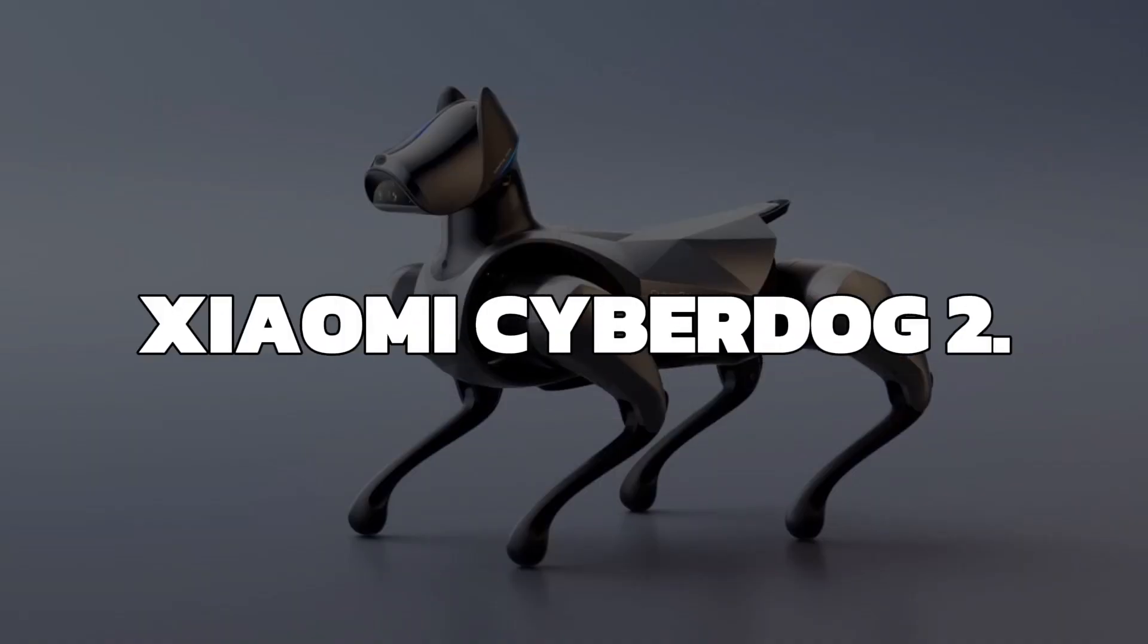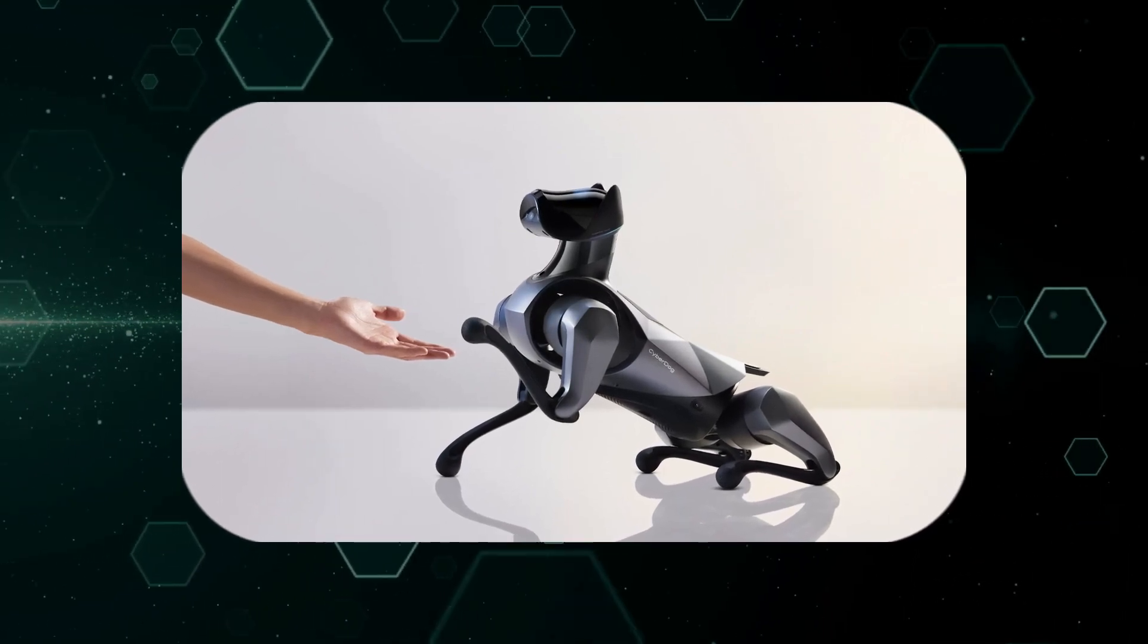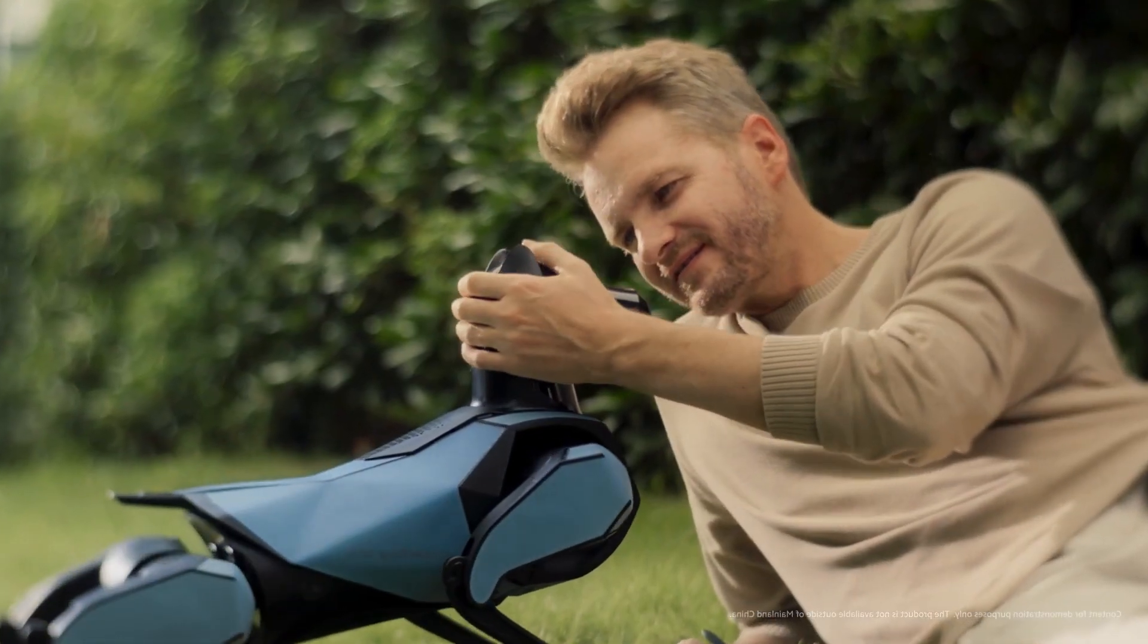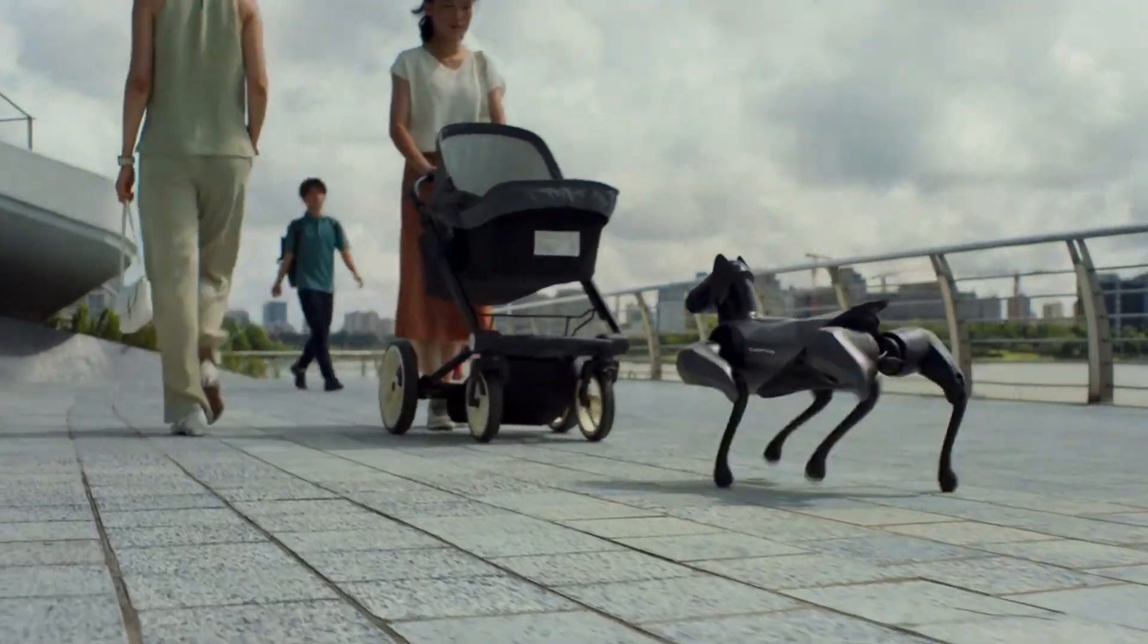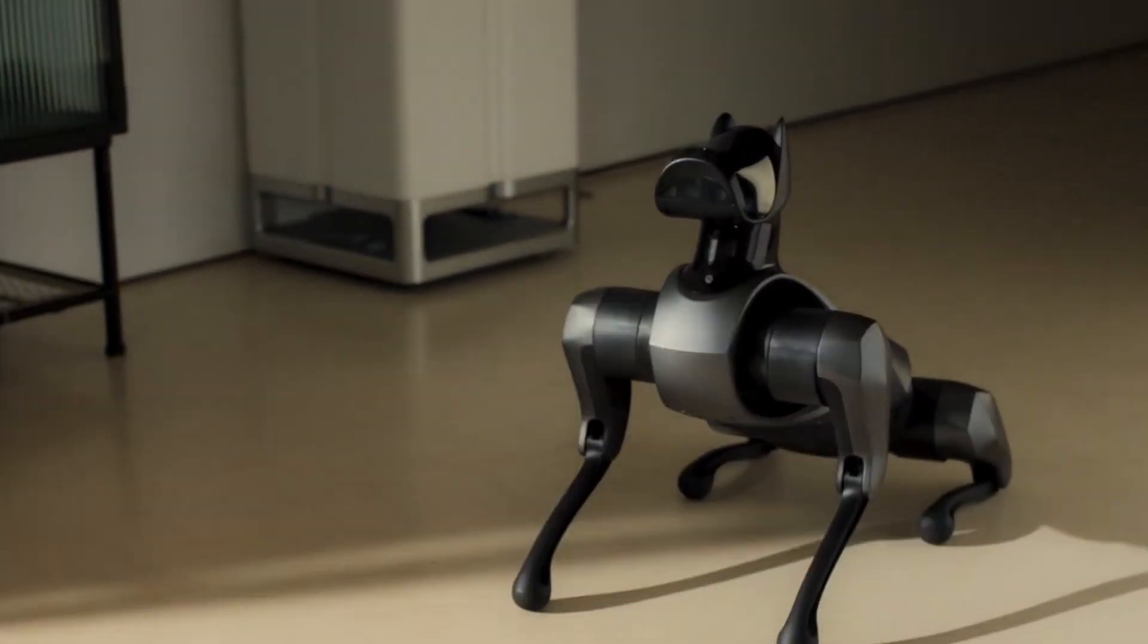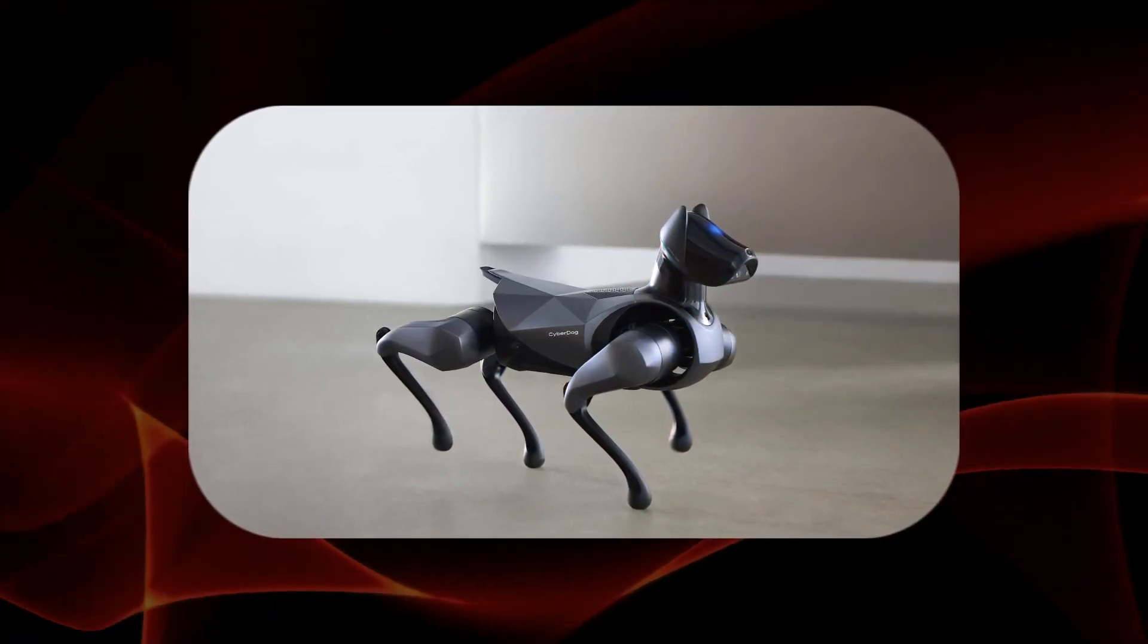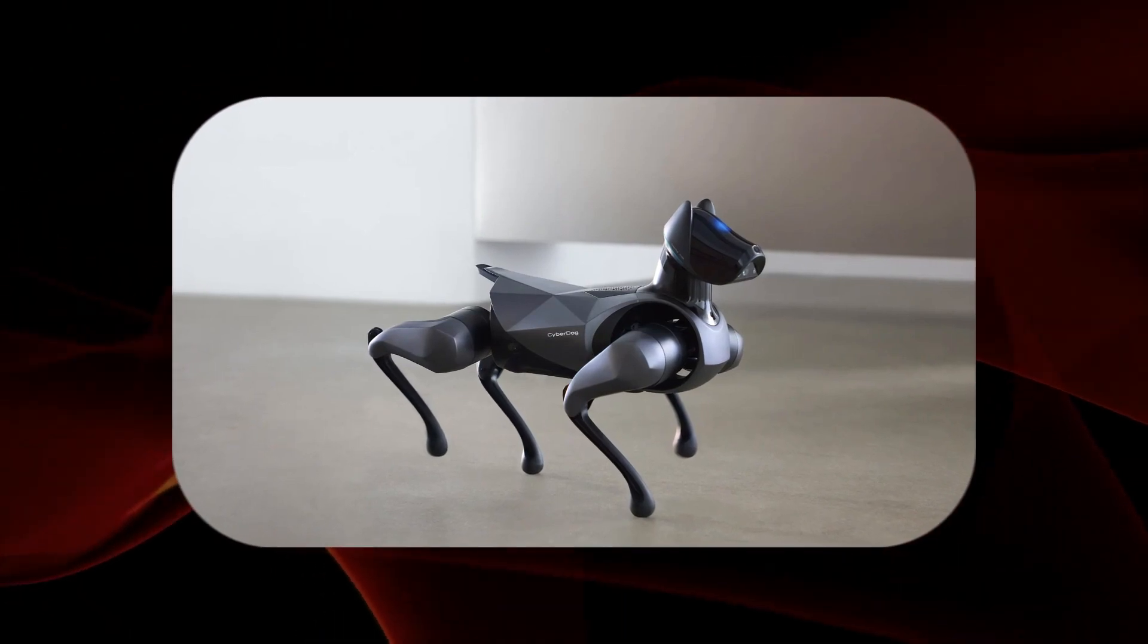Xiaomi CyberDog 2. This four-legged robot dog might look cute, but it packs some serious tech power. With advanced sensors and AI, it could work in search and rescue, assist those with disabilities, or even offer companionship. However, as robots get smarter, we need to consider how they fit into our lives. As tools, or something more?